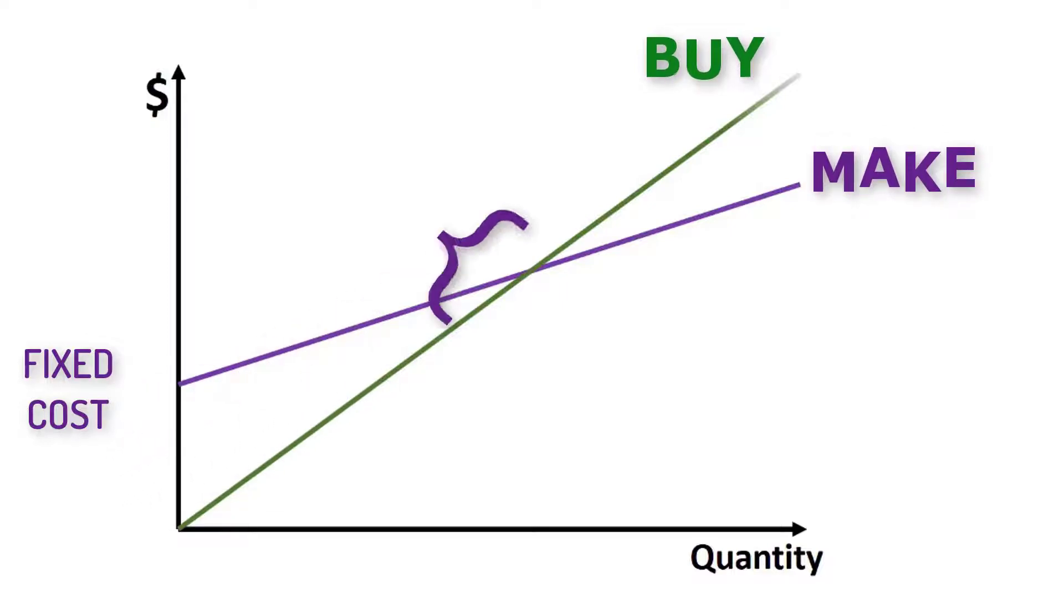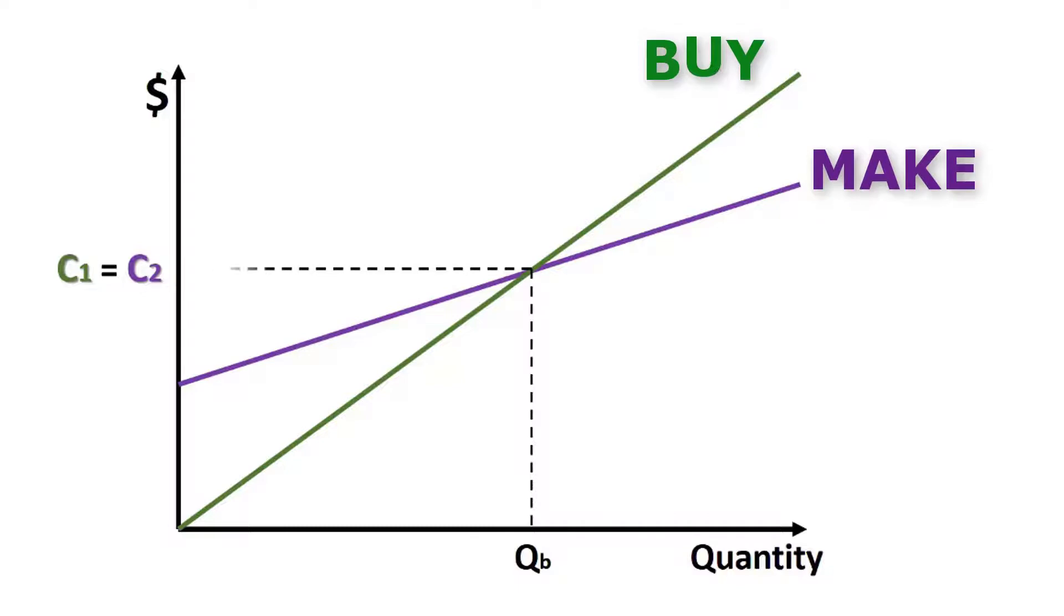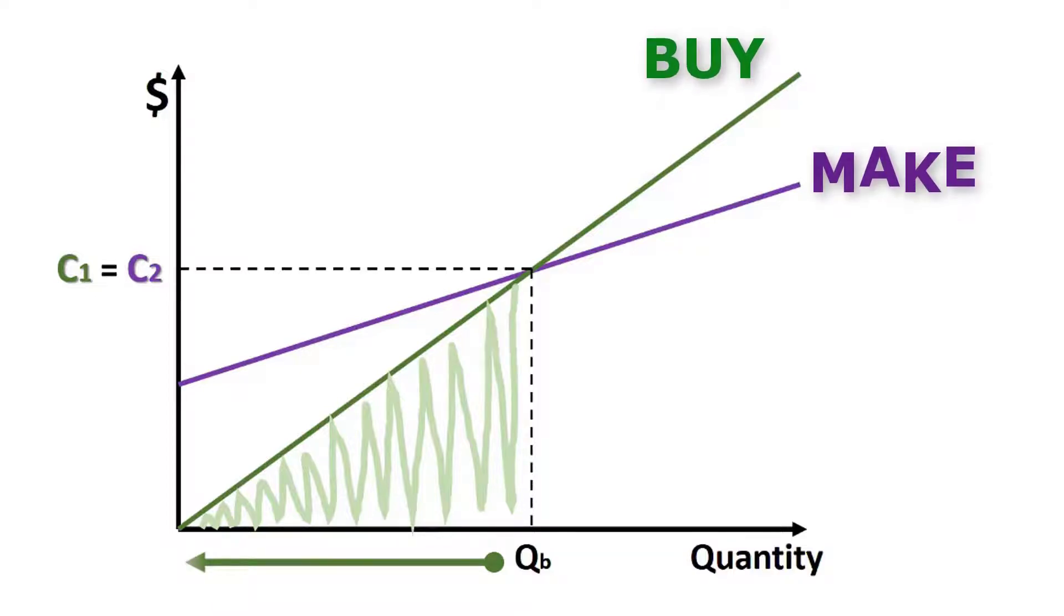It is important to realize that here we are looking for an alternative with the lowest cost. We can see that below the break-even quantity, QB, the green line, buy alternative, has a lower cost.